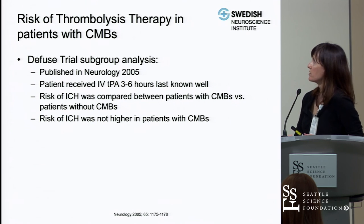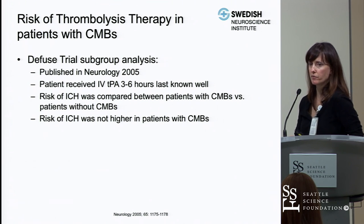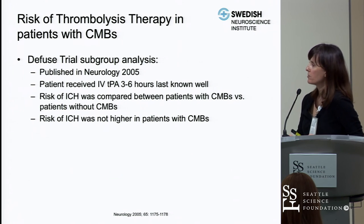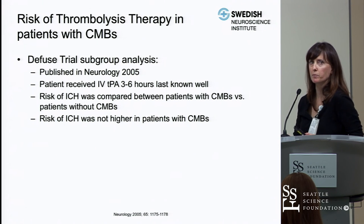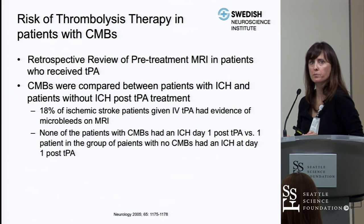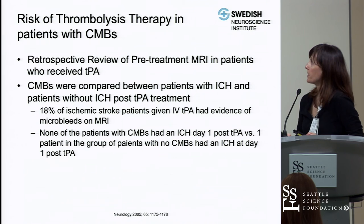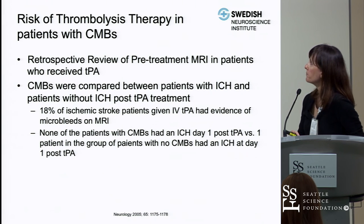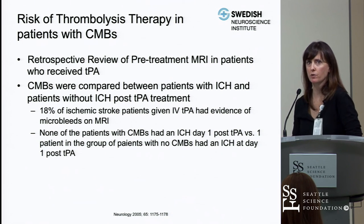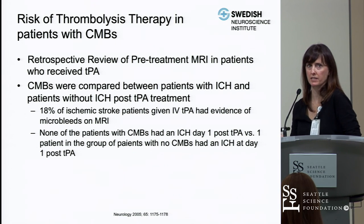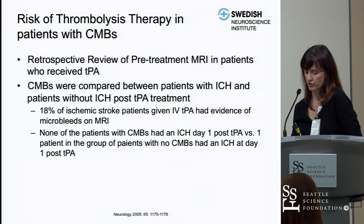In the DEFUSE trial subgroup analysis, patients did have an MRI before receiving IV thrombolysis in the three- to six-hour window, and the risk of ICH was not higher between the microbleed and non-microbleed groups. A retrospective review of patients with a pre-treatment MRI before IV tPA found that 18% had evidence of microbleeds, and there was no difference in the rate of hemorrhage between those with microbleeds versus those without.